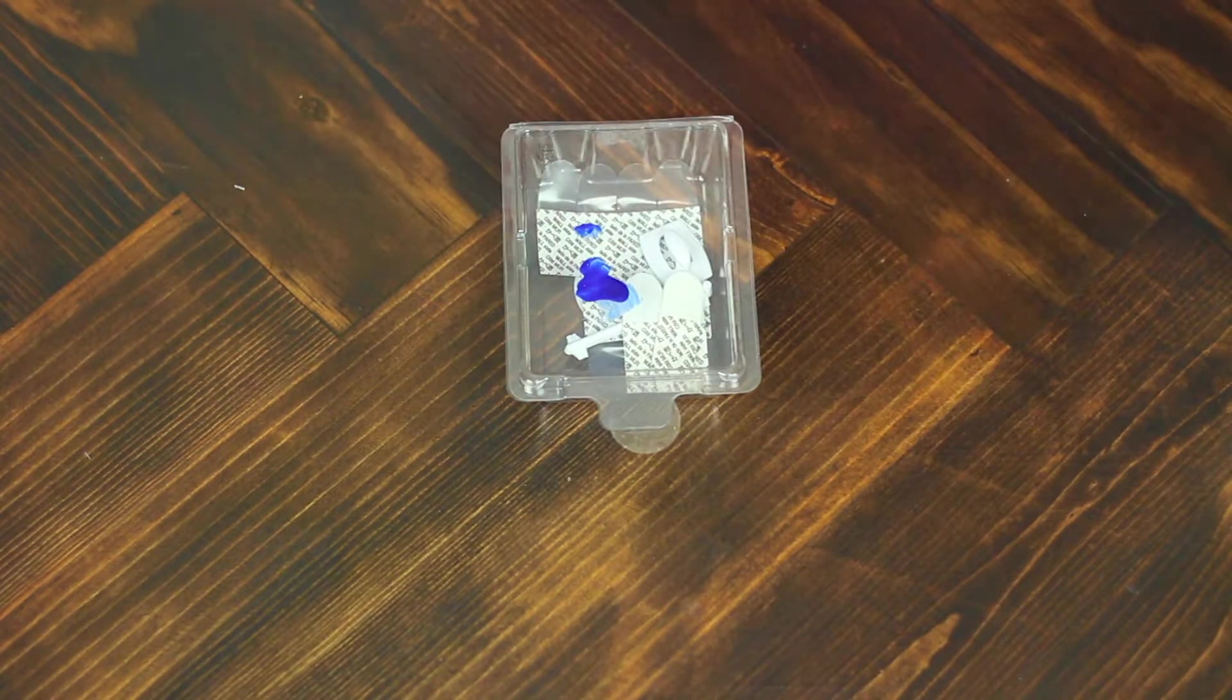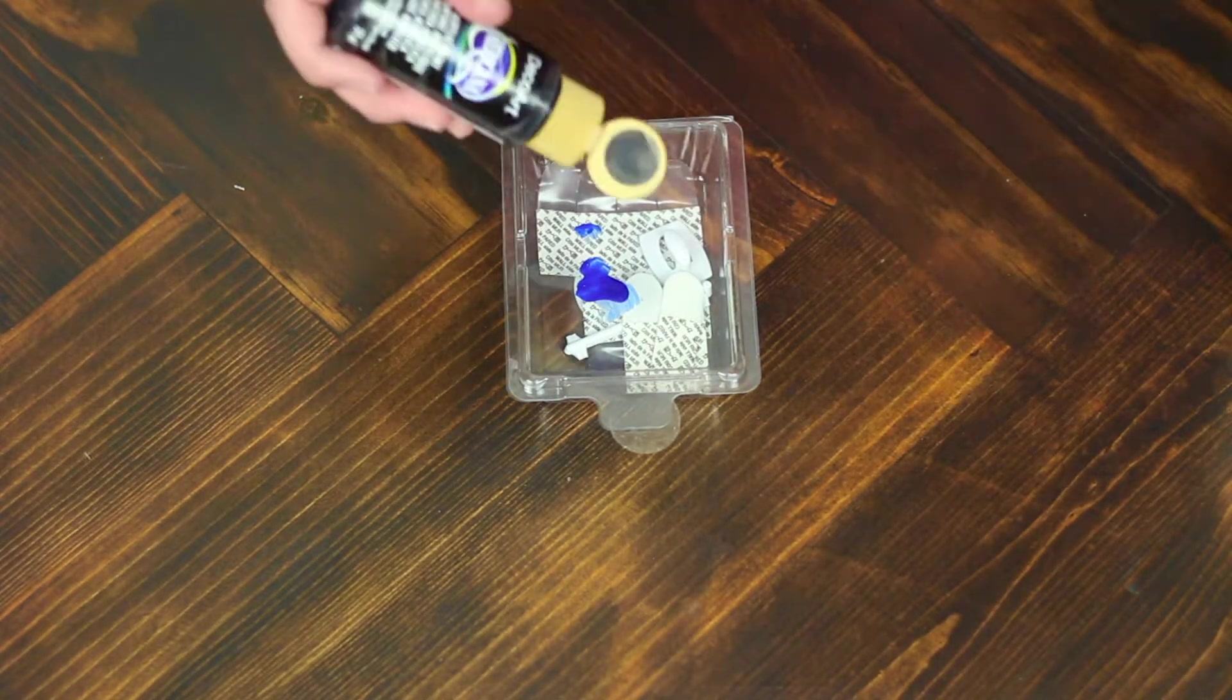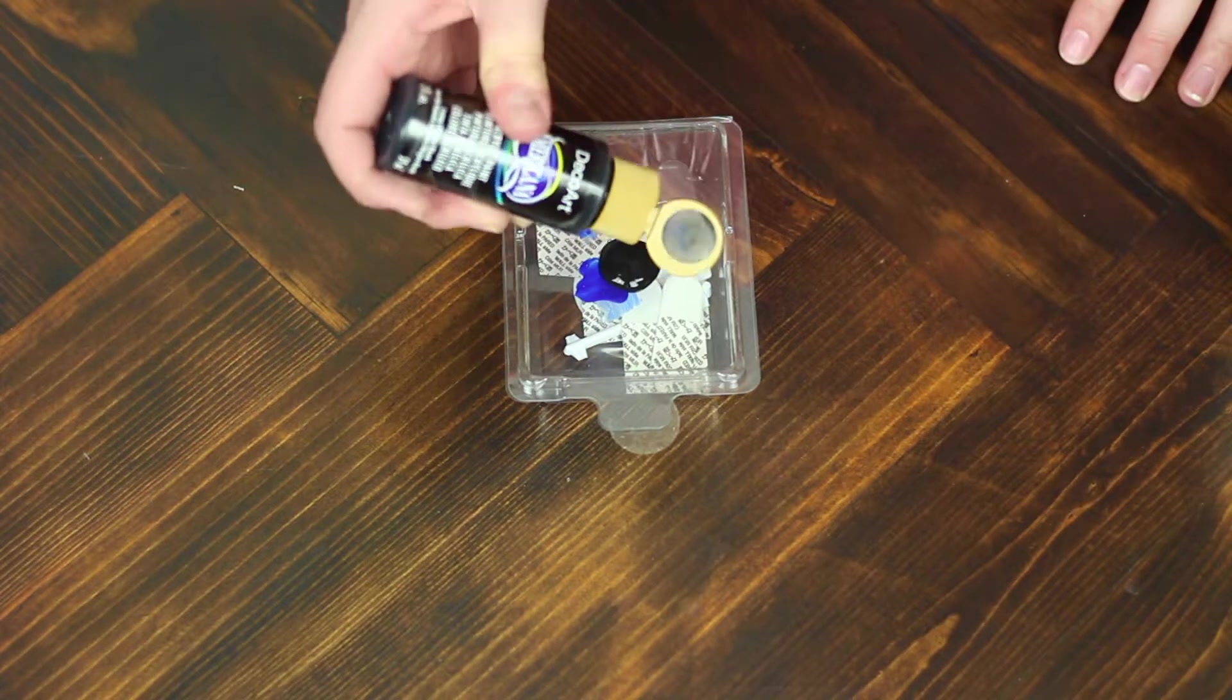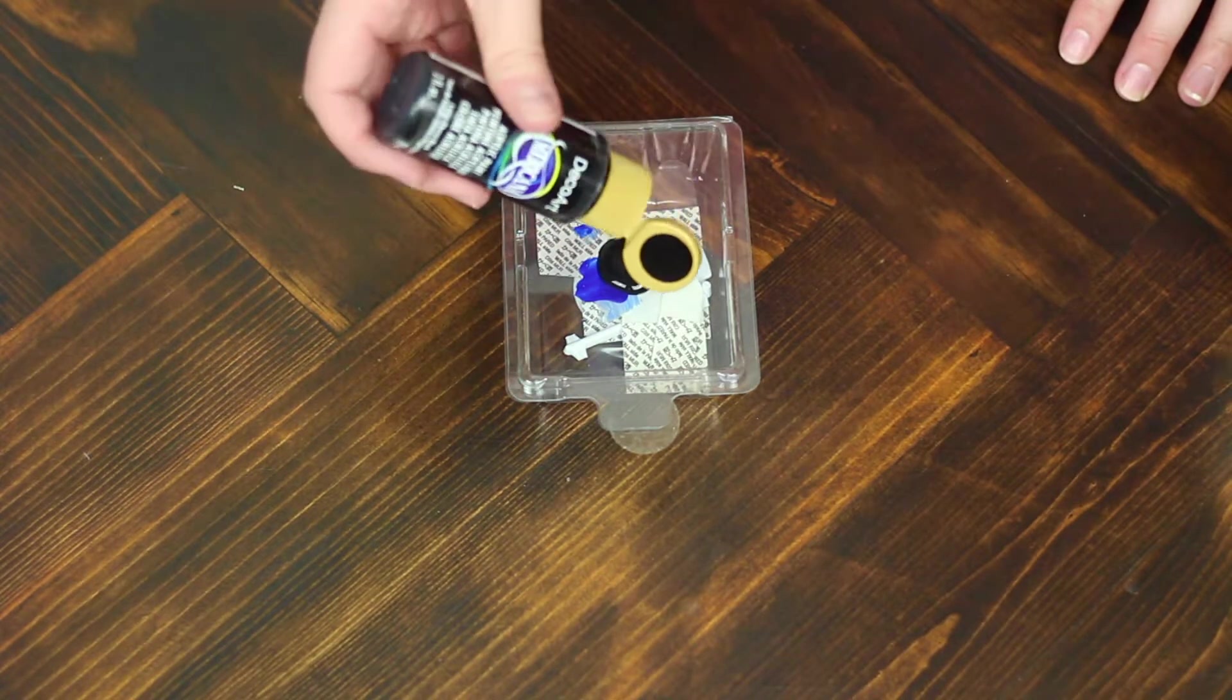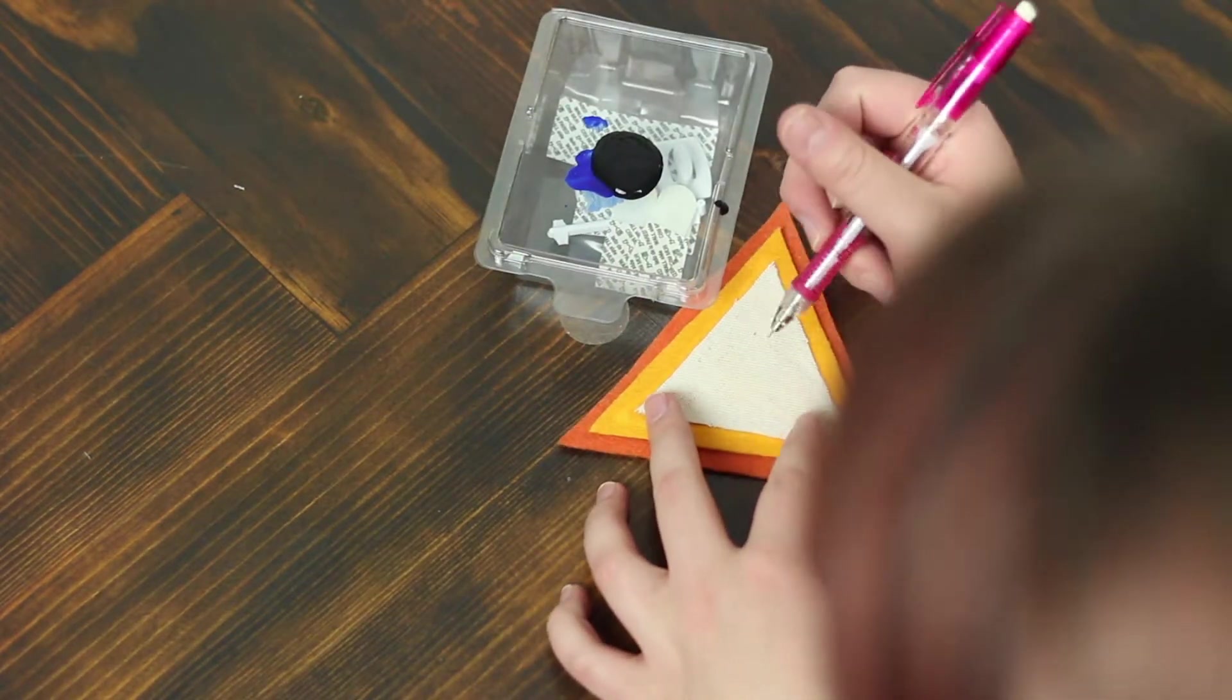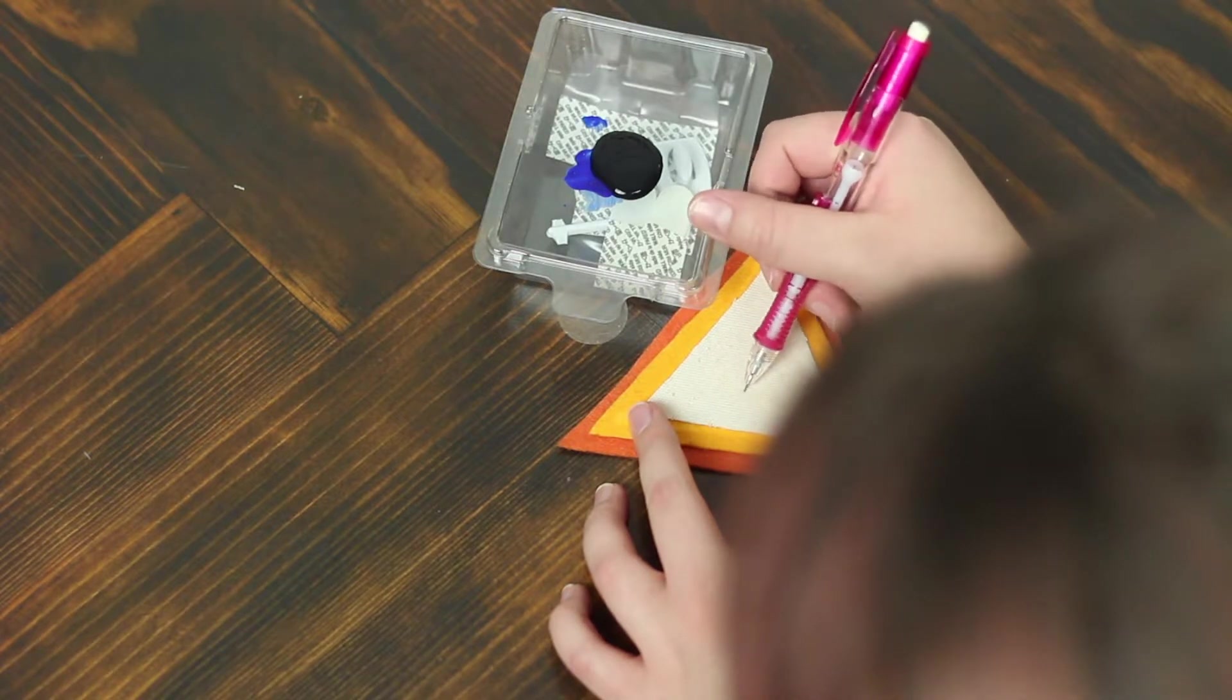This may look pretty sketchy but I literally just use an old command hook container as my tray for paint because I lost my paint tray when I moved. This works just as well and I really don't care if it gets dirty. You can also use a paper plate if you have one on hand.